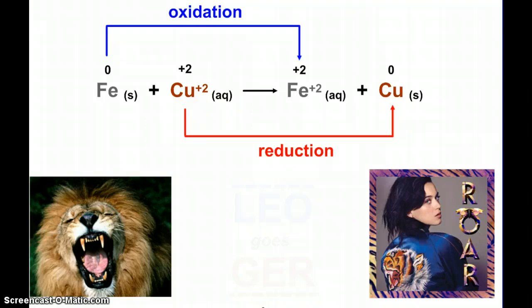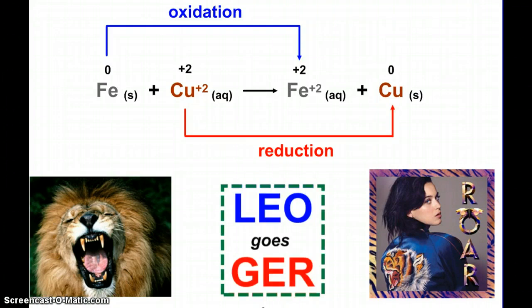Gaining of electrons is called reduction. And a fantastic way that you can remember this is the wonderful phrase, Leo goes ger. Leo the lion goes ger. Losing electrons, oxidation. Gaining electrons, reduction. What a fantastic saying that can help you remember that. It may even get you a point on a quick check coming up here soon.